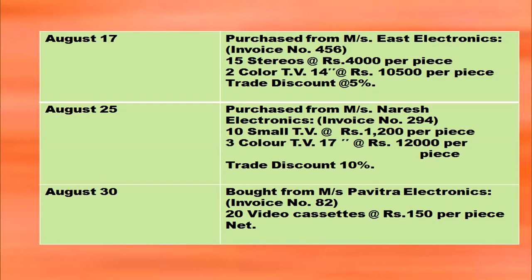Some more transactions for Harsha Electronics: on August 17th from Messrs East Electronics, 15 stereos at rupees 4,000 per piece and 2 color TVs at rupees 10,500 per piece, with trade discount at 5%. Then on August 25th, purchase from Messrs Naresh Electronics: 10 small TVs at rupees 1,200 per piece and 3 color TVs at rupees 12,000 per piece, with trade discount 10%. And similarly one more transaction is given on August 30th.